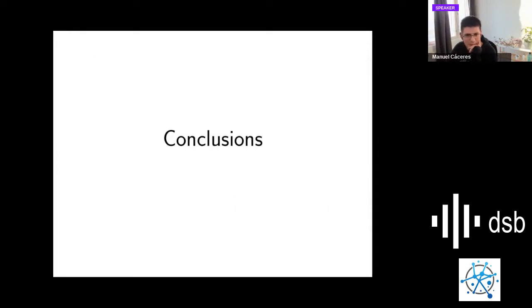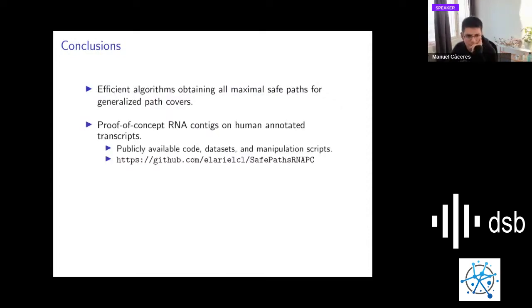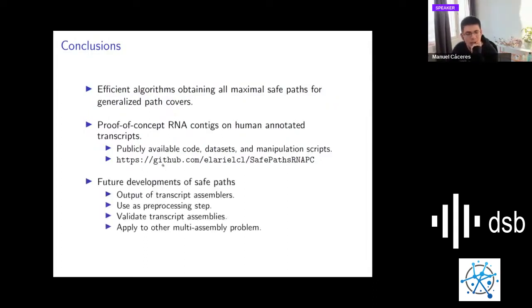To end this presentation, I would like to make some conclusions. We present efficient algorithms that obtain all maximal safe paths for generalized path cover. We did a proof of concept of RNA contigs on human annotated transcripts. Everything, the code, the dataset, and the manipulation scripts are available at this URL. We also consider that future development of safe paths in generalized path cover is possible and worth it. For example, apply to other multi-assembly problems, not only RNA transcript assembly.